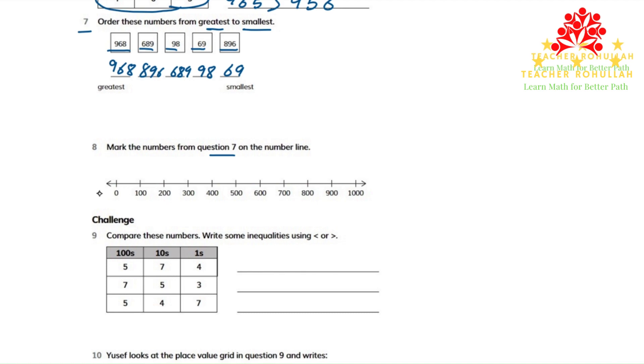On a number line, the smallest number comes to the left and moving to the right, the number becomes bigger. So we will start with placing the smallest number.